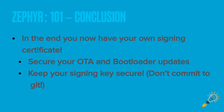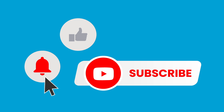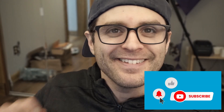In the end you have your own signing certificate, which secures your OTA functionality and any local bootloader capabilities over USB or USB serial. Keep your signing key secure — it's not recommended to commit it to Git. Consider storing it on an air-gapped machine to make sure it's never compromised. If you like this content, feel free to subscribe, hit the like button, and the bell icon if you'd like to see more. Thanks for being here and we'll see you on the next one.